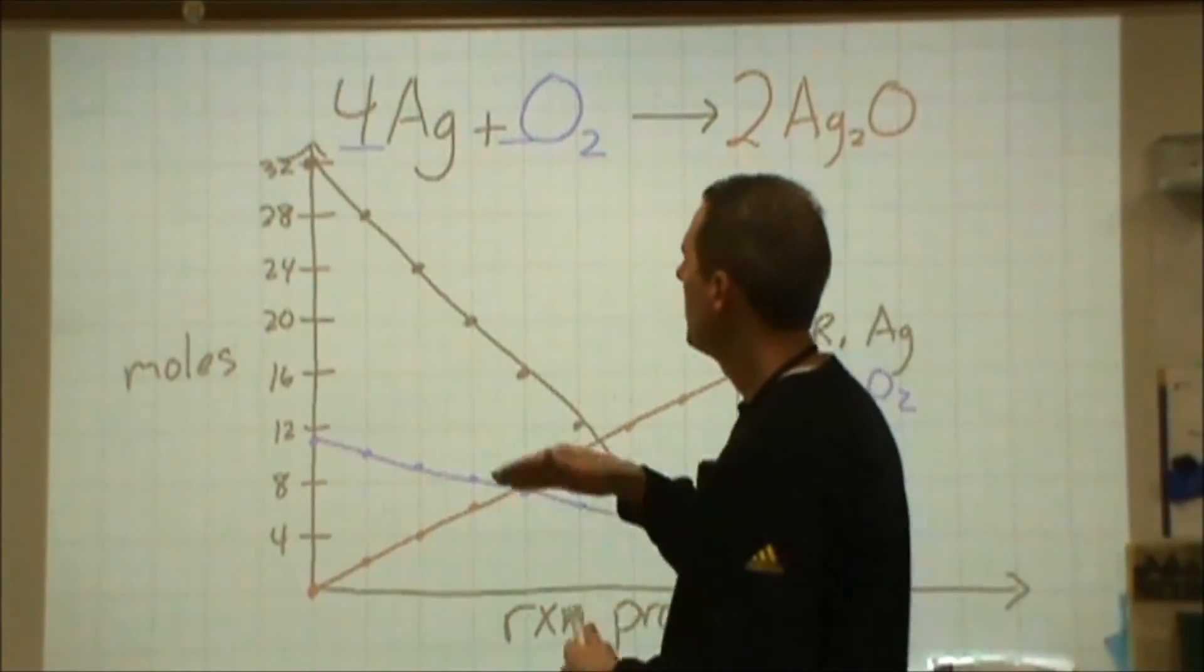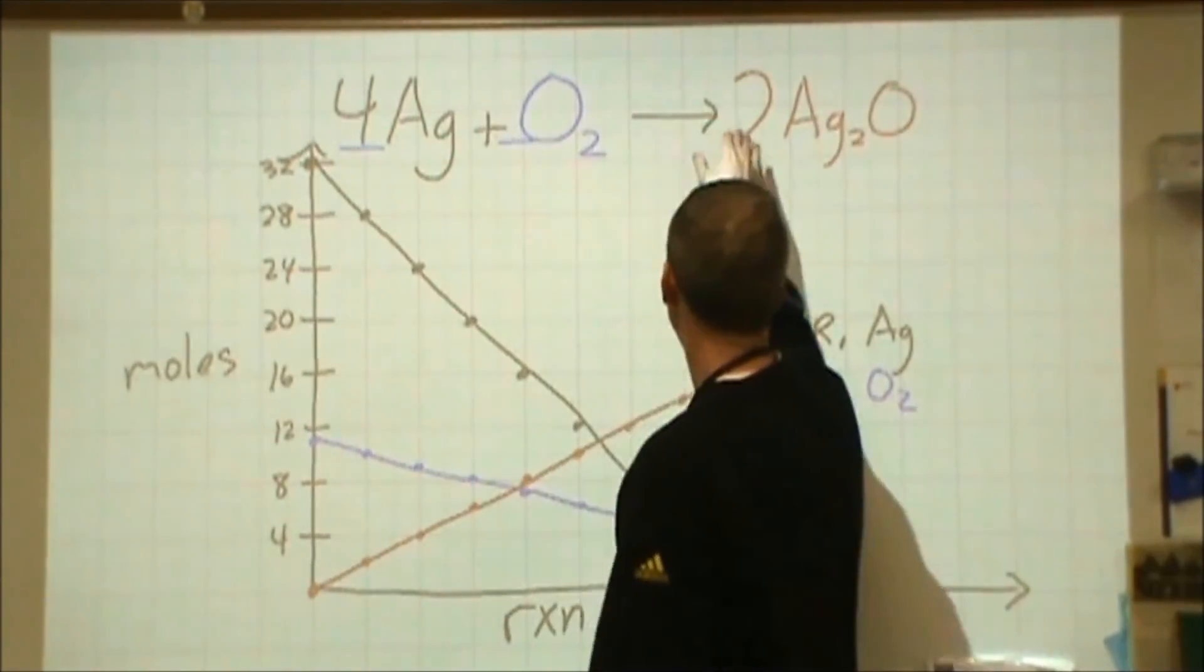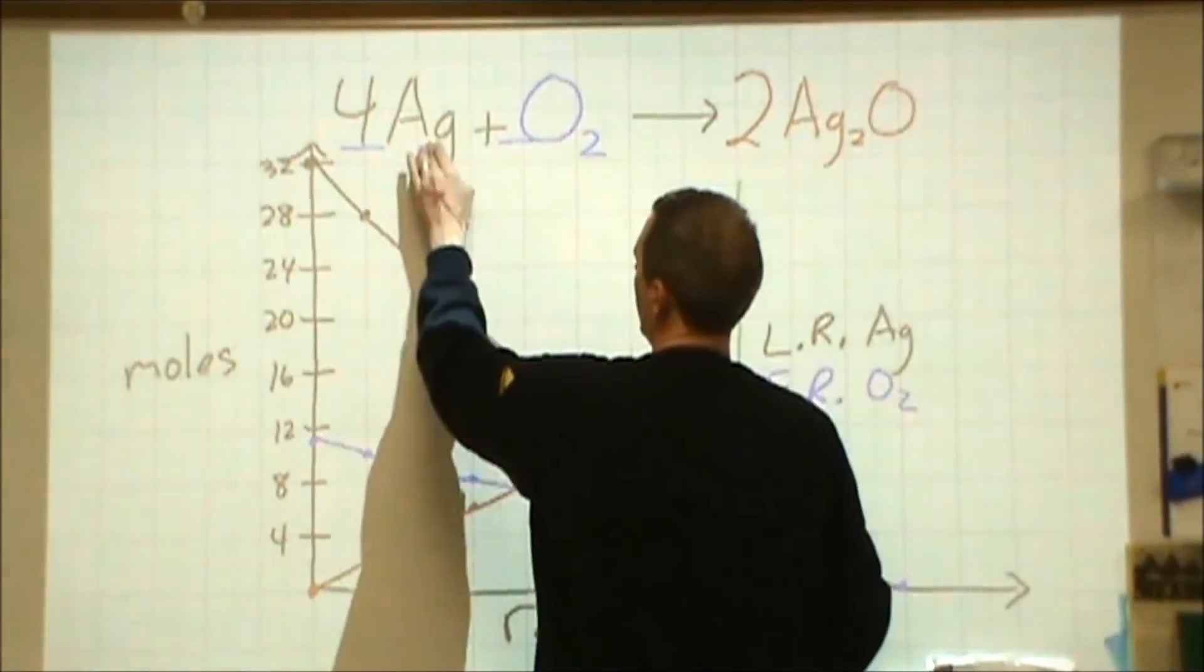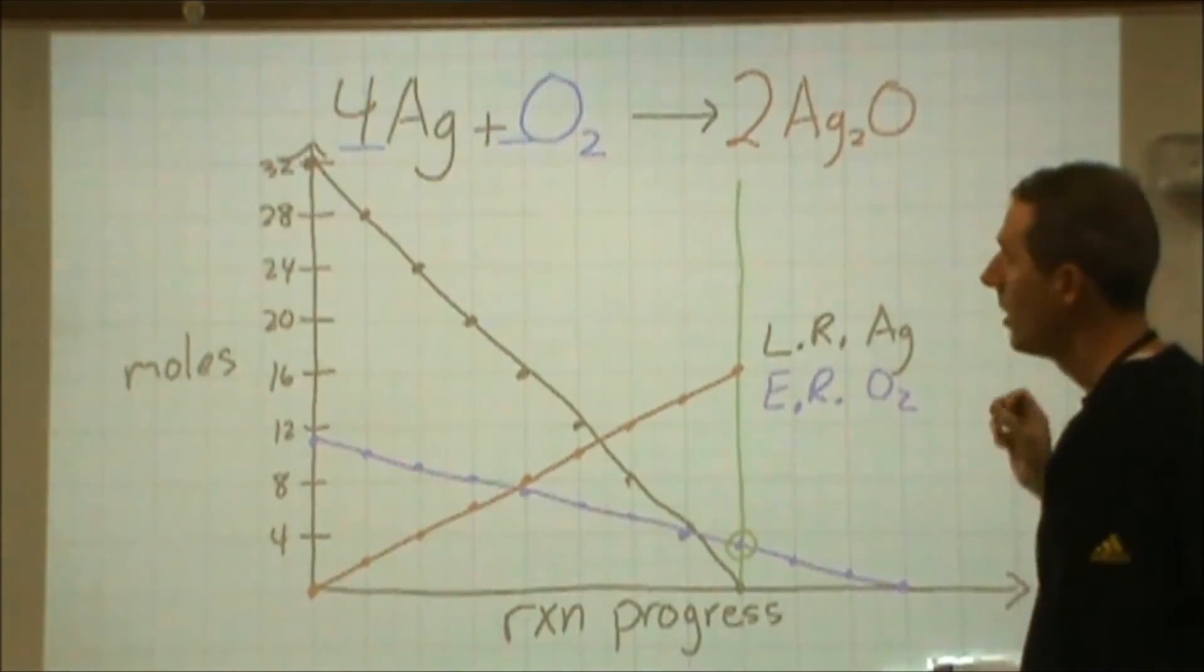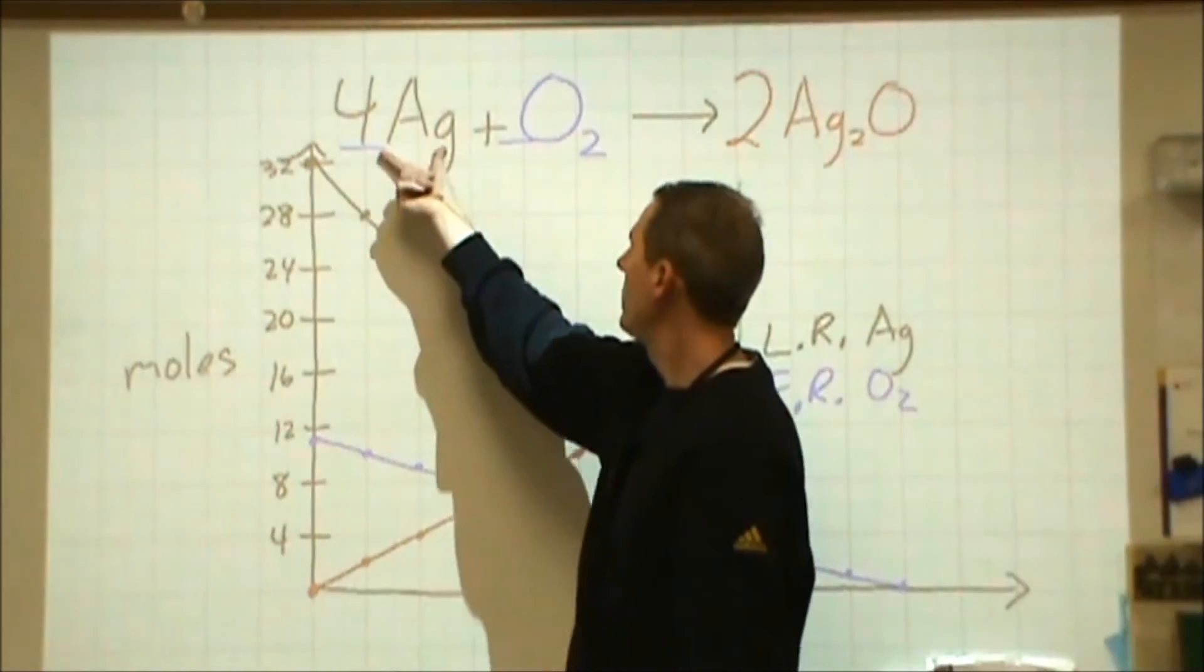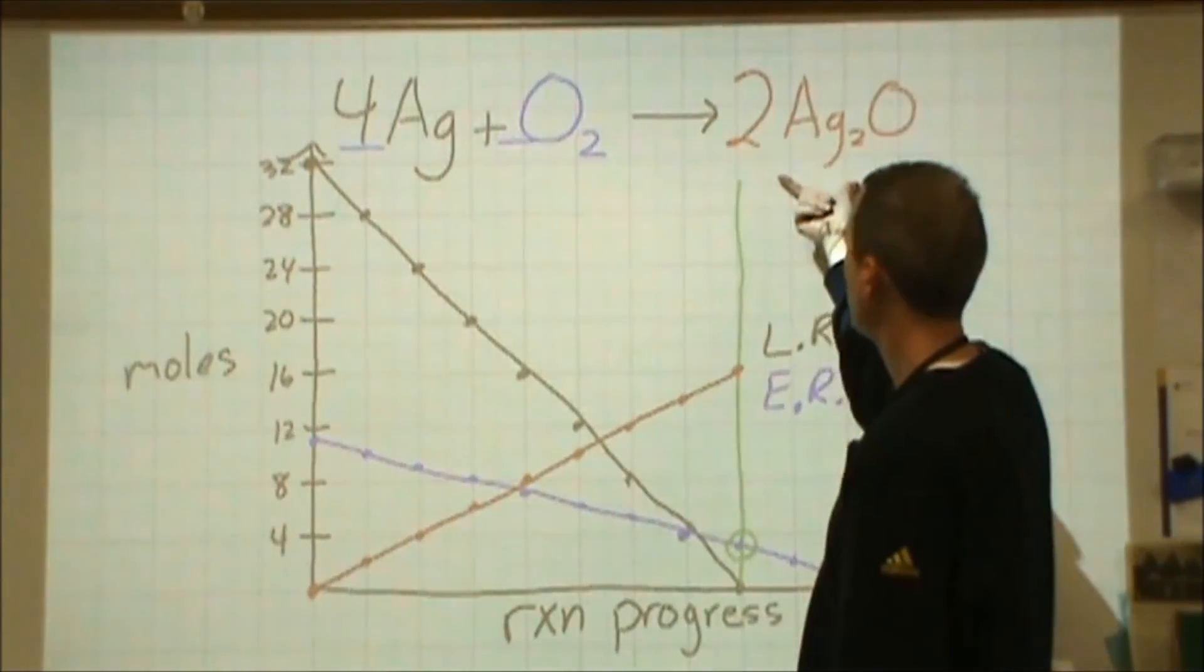So that's hopefully going to give you some idea of what these mean. Now at a fundamental level, this means four atoms of this react with one molecule of this to make two formula units of this. Or alternatively, four moles of this react with one mole of this to make two moles of this.